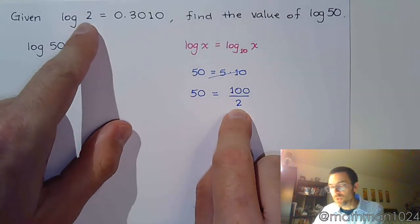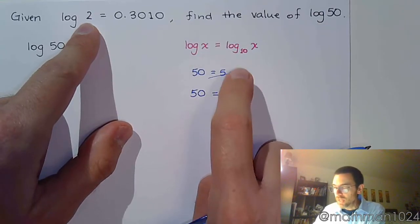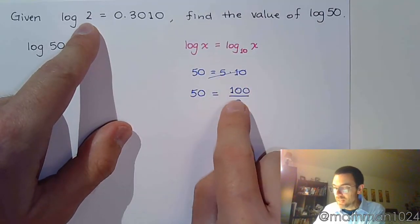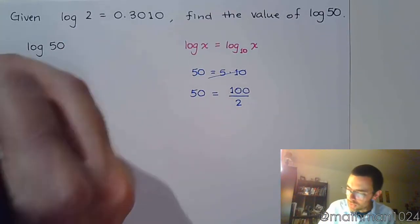Now this 2 is great because we know what to do with log of 2. And the 100 is great because the log we're dealing with is base 10, and this is a power of 10. So that's how we do this.